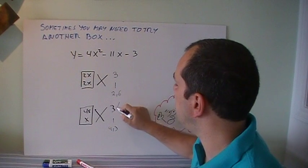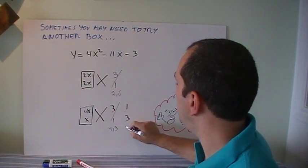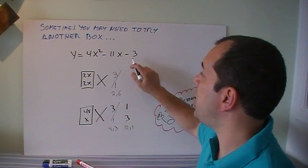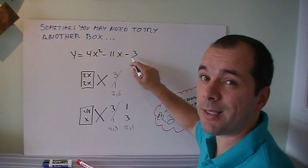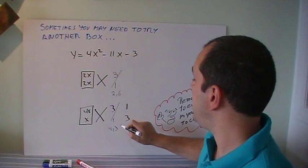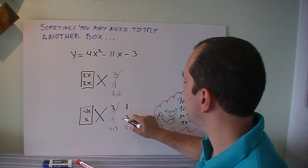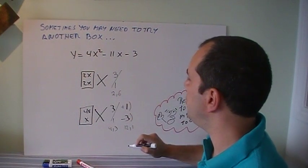And now, 12 and 1. Well, with 12 and 1, I can make 11. As a matter of fact, I knew that one is going to be plus, one is going to be minus, because that last one is a minus. So if I make this minus 12, and this plus 1, this will work out.